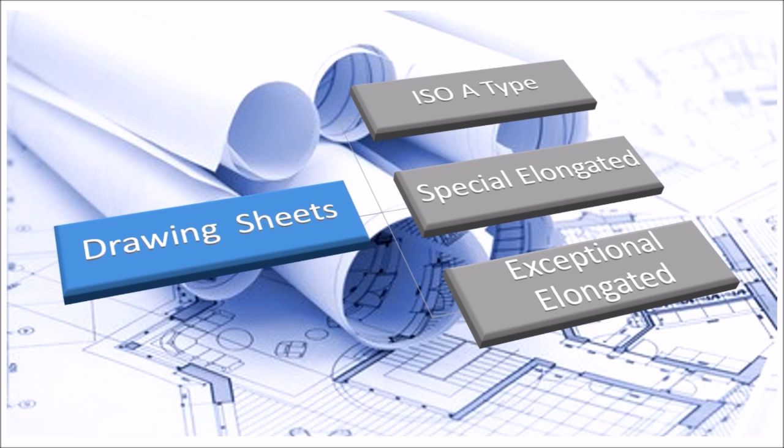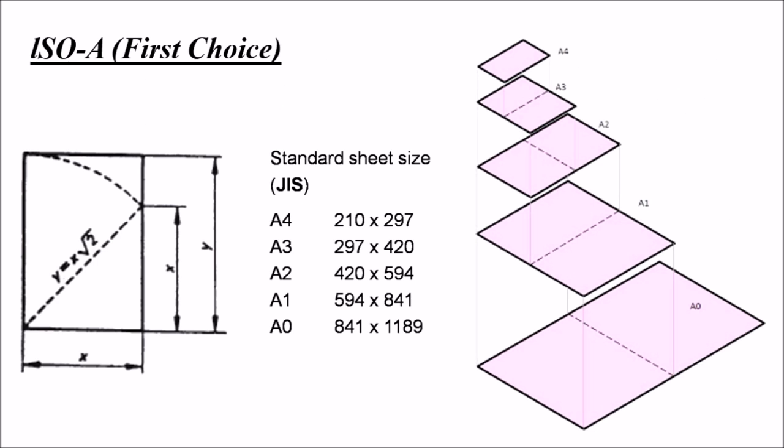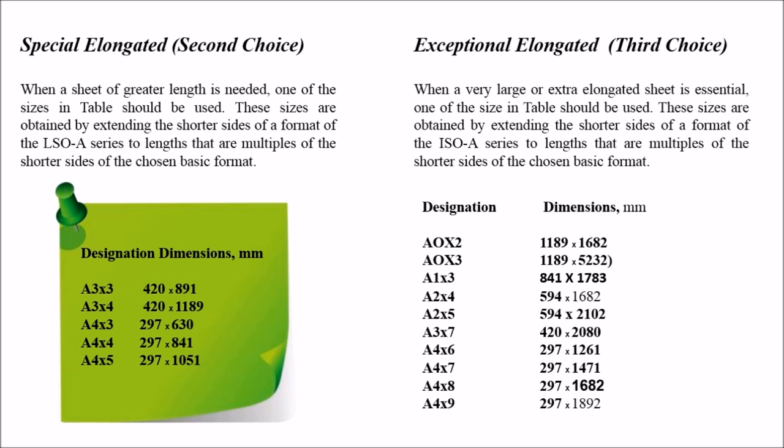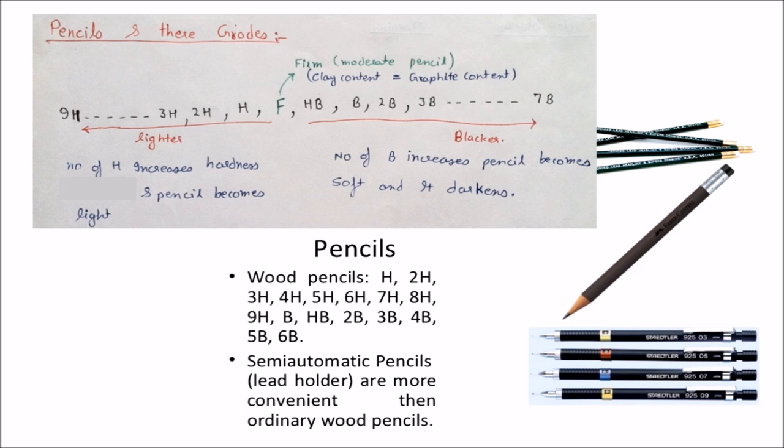The first choice of an engineer is obviously ISO A type sheet which are A4, A3, A2, A1 and A0. The length to width ratio of these sheets is 1 to root 2. The second type of sheets are special elongated sheets which are larger in size if the length to width ratio is a numerical multiple. Exceptional elongated sheets are larger than ISO A type sheets and hectic to fold out.